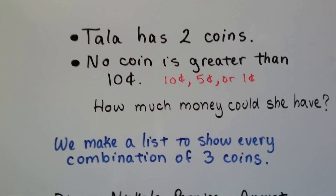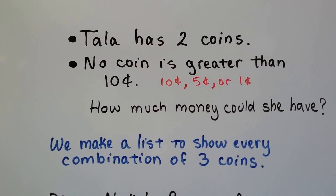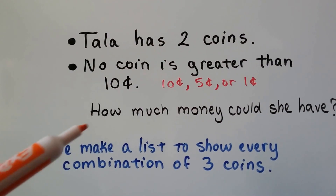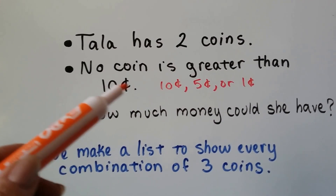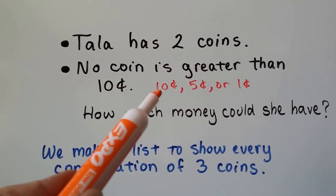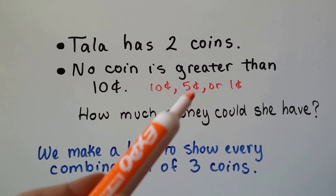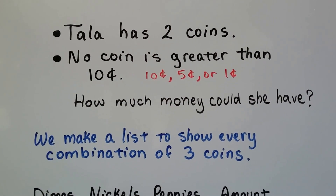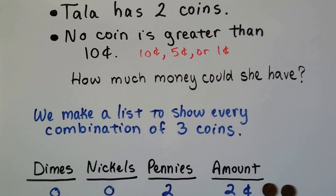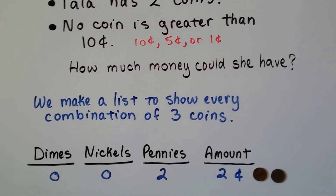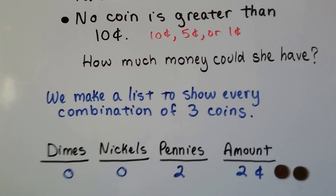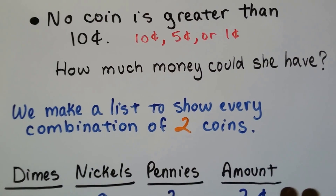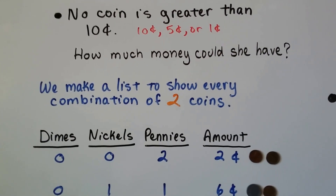Tala has two coins and no coin is greater than ten cents. Since it's not greater than ten cents, that means it includes ten cents, so the coins can be ten cents, five cents, or one cent. She only has two coins, so how much money could she have? We make a list to show every combination of two coins.